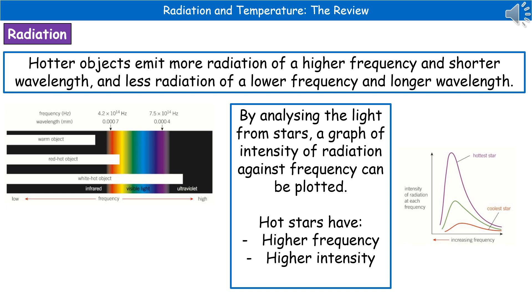Now, what we can see there is that when we've plotted that graph, we can spot the hottest star with that purple line because it's got a higher frequency and higher intensity. Whereas the coolest star, which is the red line there at the bottom, that's only got a very low amount of our high frequency waves.